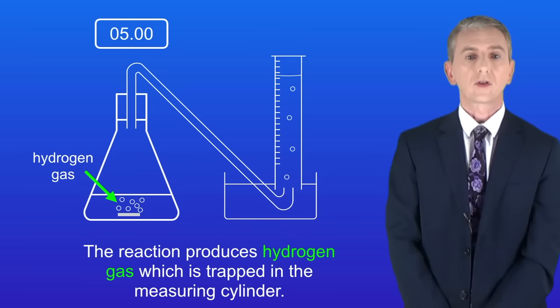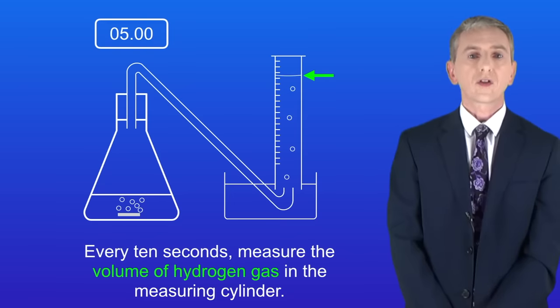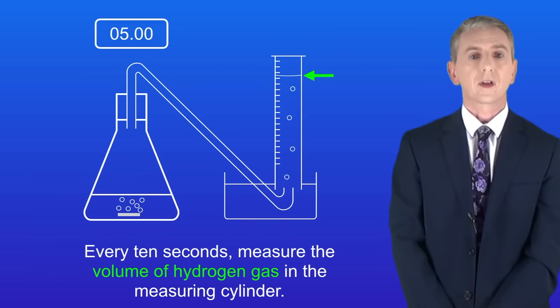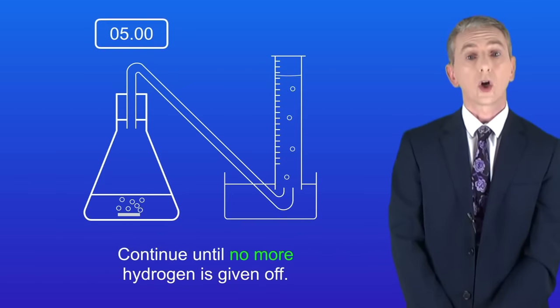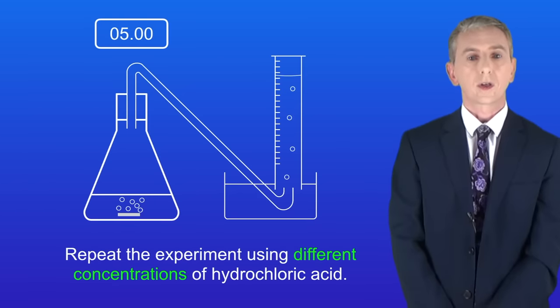The reaction produces hydrogen gas and that's trapped in the measuring cylinder. Every 10 seconds we measure the volume of hydrogen gas in the measuring cylinder and we continue until no more hydrogen is given off. We now repeat the experiment using different concentrations of hydrochloric acid.